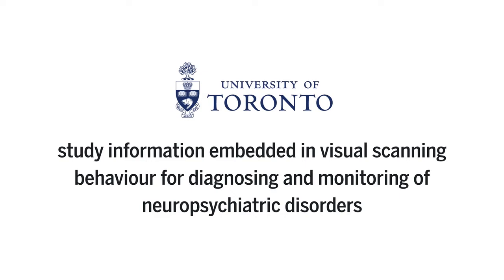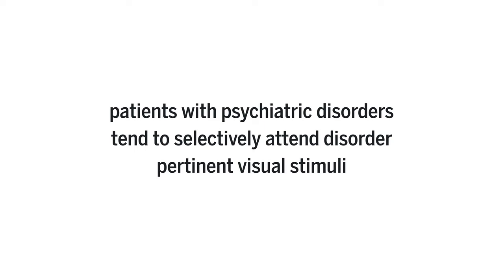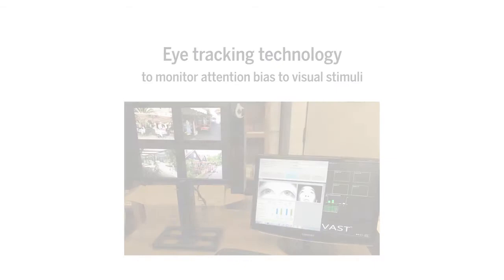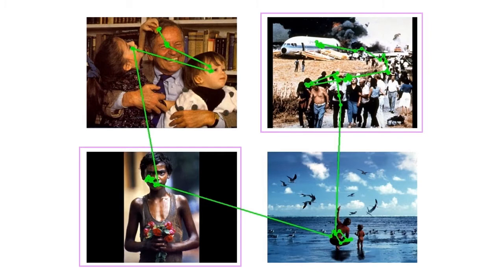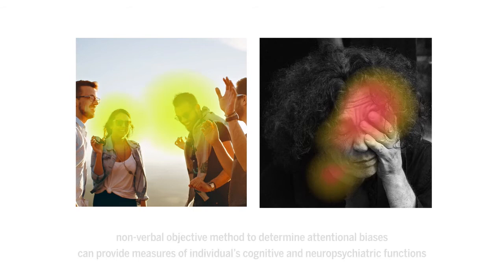That is, patients with neuropsychiatric disorders tend to selectively attend disorder-pertinent visual stimuli, and attentional biases to the visual stimuli can be monitored using eye-tracking technology. For example, when presenting images of social interactions and dysphoric images to patients with depression, they tend to focus on dysphoric images more than controls. This non-verbal objective measure to determine attentional biases can provide measures of an individual's cognitive and neuropsychiatric function.